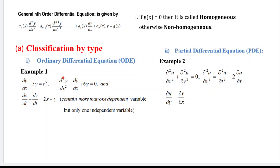Here the number of derivatives is two, so this is a second-order ordinary differential equation, with only one independent variable. In the next example, x and y are both dependent variables and t is the only independent variable, so it is also a first-order ordinary differential equation. When the differential equation contains two or more independent variables, it is called a partial differential equation.